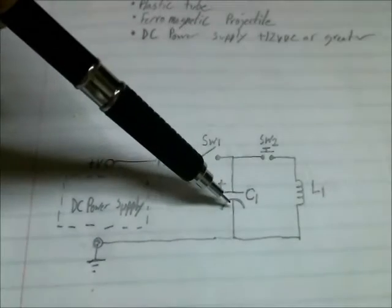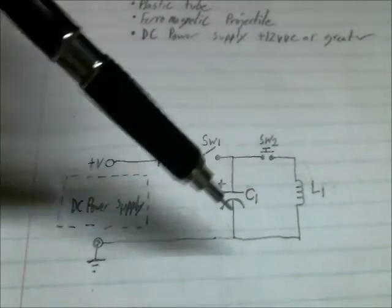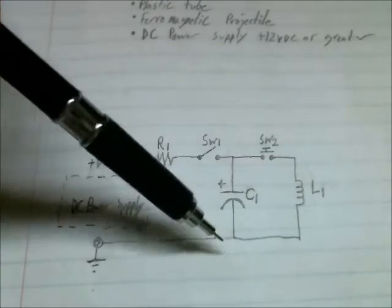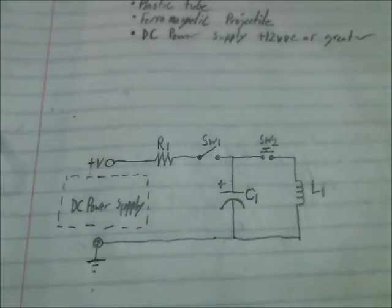And also what you would attach to the capacitor is your momentary on switch. And from that you would connect your inductor to the negative of your electrolytic capacitor. So I'm going to connect that up.